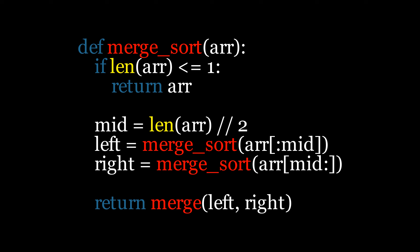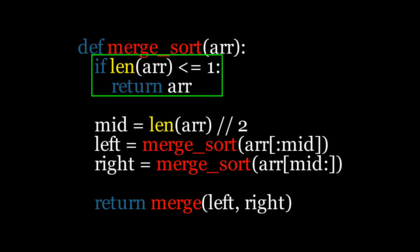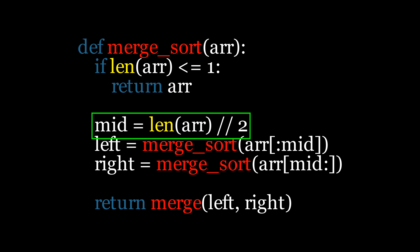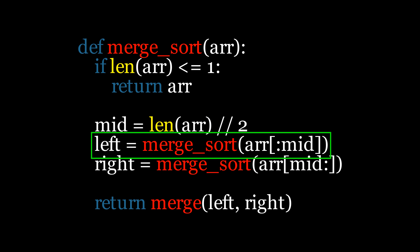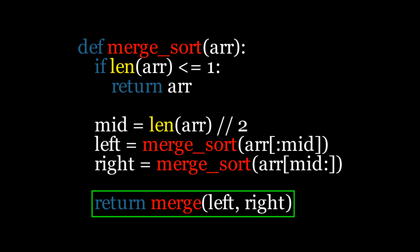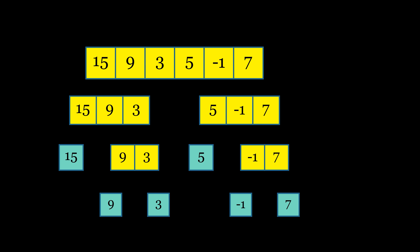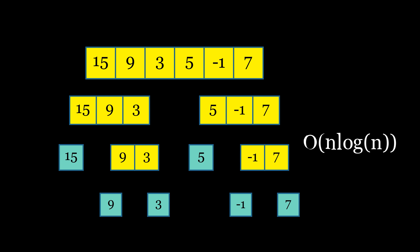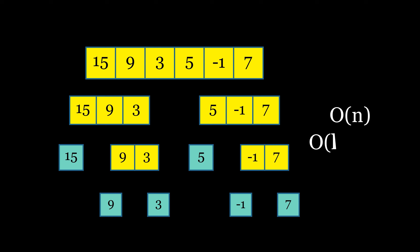The code for merge sort is straightforward. First, we define the function merge_sort, which takes an unsorted array as the input parameter. The base case of the recursion is when the length of the array is less than or equal to 1, meaning the array is already sorted. Next, we calculate the midpoint of the array by dividing its length by 2. We then recursively apply the merge sort function to both halves, storing the results in the left and right variables. Finally, we merge these sorted halves together using the merge function and return the merged array. The number of divisions is proportional to the logarithm of the number of elements, and since merging at each level takes linear time, the overall time complexity is O(n log n). The space complexity is O(n) due to the additional space needed for merging.